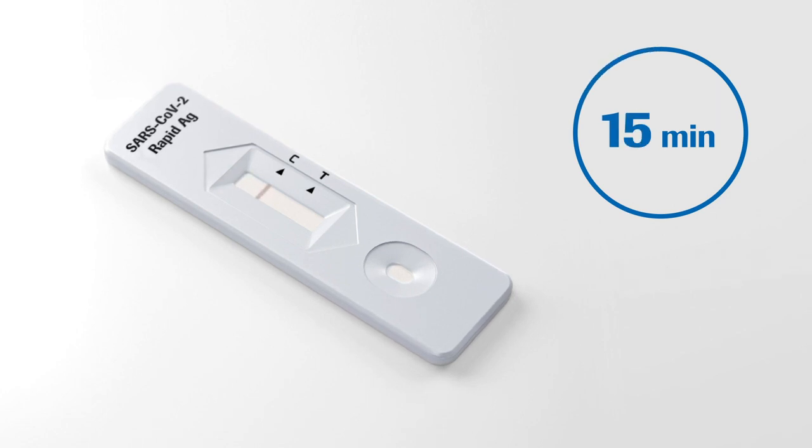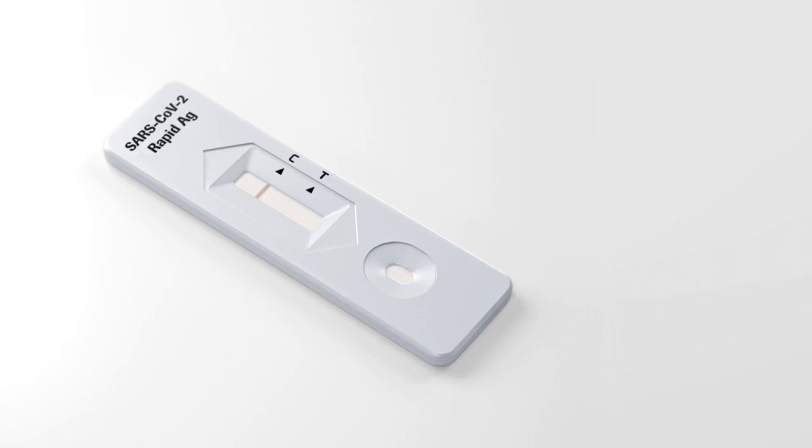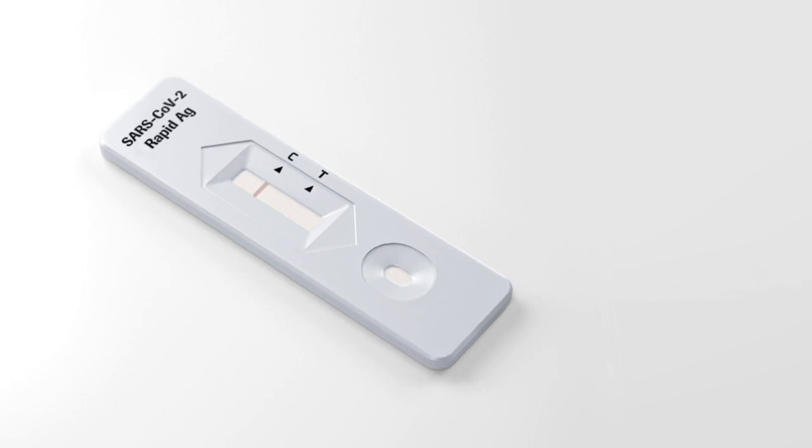In the top section of the result window, a colored line appears to show that the test is working properly. This is the control line C. Even if the control line is faint or not uniform, the test should be considered to be performed properly.